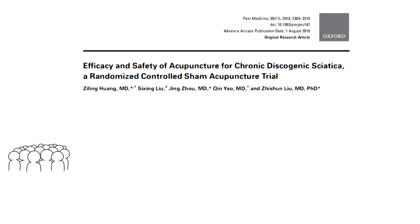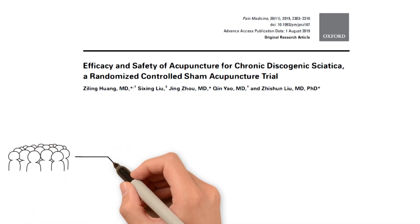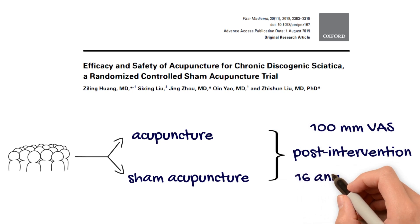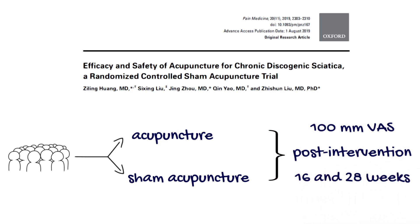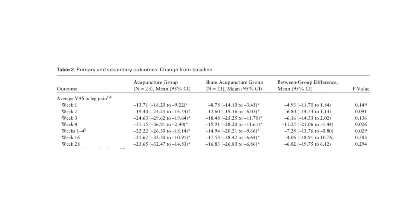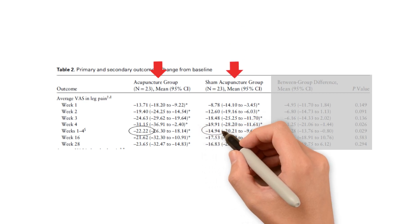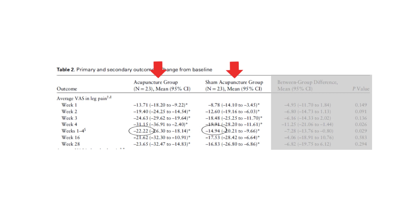Let's look at an example. In this study, researchers randomized participants with sciatica to receive either acupuncture or sham acupuncture for four weeks. Their primary outcome was leg pain, measured using a 100 mm visual analog scale immediately following the intervention, and at 16 and 28 weeks. Their table provides two types of estimates. First, they provide change scores within each group. We see that the acupuncture group experienced a decrease in pain of 22 out of 100 immediately following the four-week intervention — a small but clinically important change. Participants in the sham acupuncture group experienced a decrease in pain of 15 out of 100, a change that is smaller and likely not clinically important.